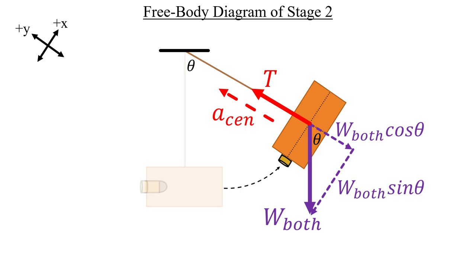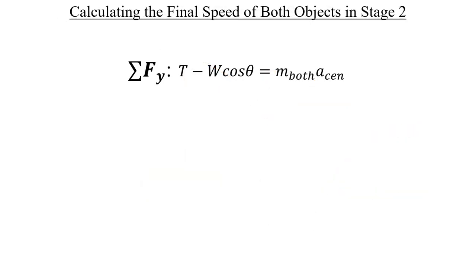With all that finished, we can now do a sum of forces in the y direction and get an expression for the final speed of this object here in stage two. Remember that the definition of centripetal acceleration is v squared divided by r. And here, v is represented by the final speed of both objects here in stage two. And the radius of the circle that these objects move in is equal to the full length of the chord, 1.6 meters, which I'm calling capital L. Let's also include the definition of the weight here and exchange w with mg.